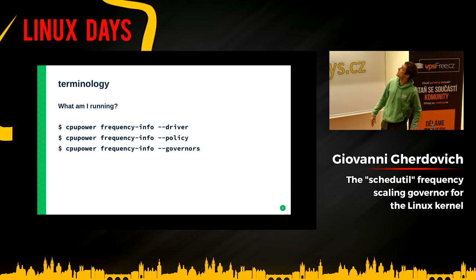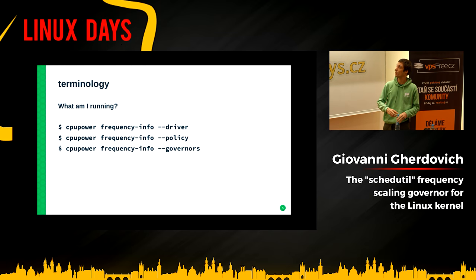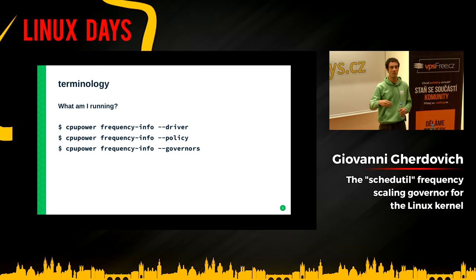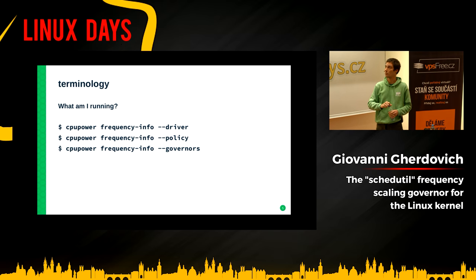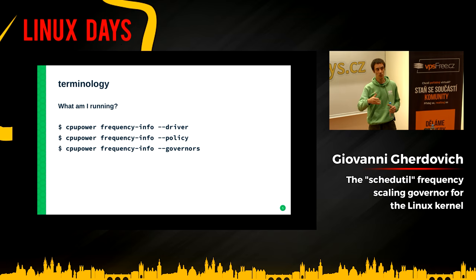You can use these commands to know what is running at the moment on your laptop. CPUpower is a tool whose source code is inside the Linux kernel source tree, but is packaged in most distributions as a separate tool. With the subcommand frequency-info and the flag --driver, you get the driver you're currently running, probably Intel P-State or ACPI CPU FRAC. The --policy flag tells you what governor is running. And --governors, plural, tells you which governors are available, because you can change the algorithm while the system is running.